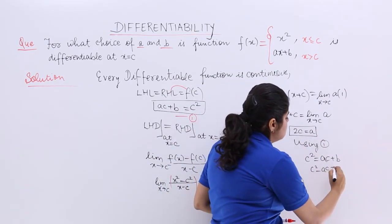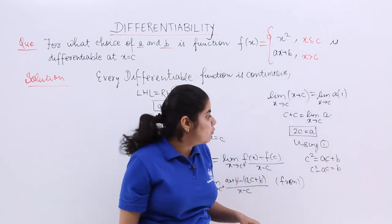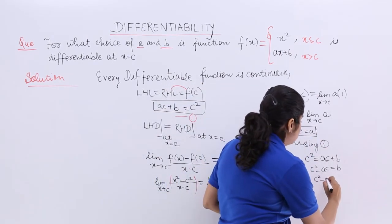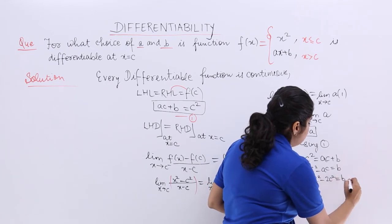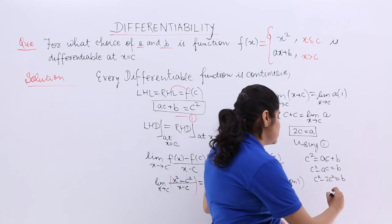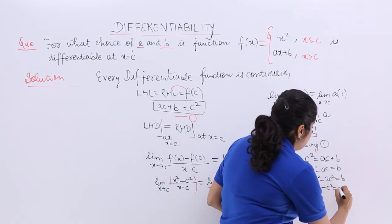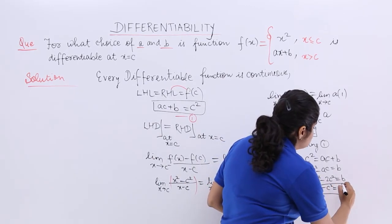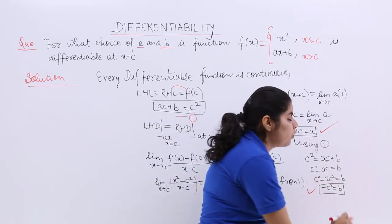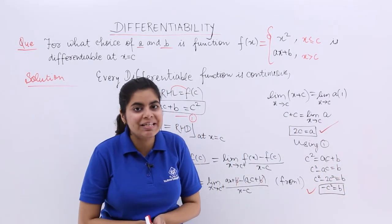So, c square minus Ac is equal to B. Now, what is A? A is equal to 2c. So, c square minus 2c square is equal to B. Right? C square minus 2c square is what? Minus c square. So, even I have the value of B now. These are my answers. The value of A is equal to 2c. The value of B is equal to minus c square.